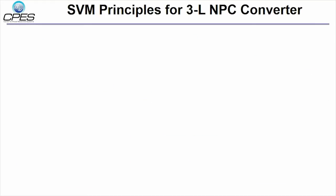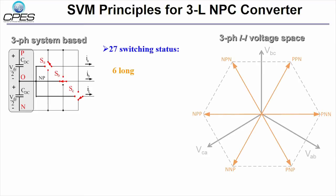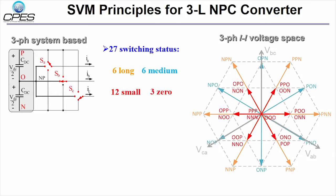For the 3-level NPC converter, each phase leg is a 3-pole switch. The 3-phase system has total 27 switching states with 6 long, 6 medium, 12 small, and 3 zero vectors. The rotating voltage reference can be synthesized by the nearest 3 vectors.